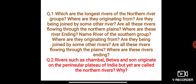Question number two: rivers such as Chambal, Betwa, and Son originated on the peninsular plateau of India, but yet are called northern rivers. Why are they called northern rivers even though they originated from the peninsular plateau?